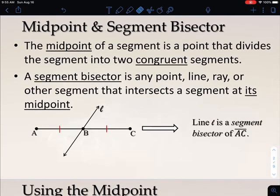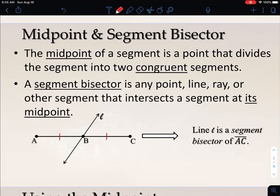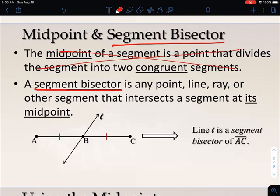Points are not the only thing that can cut segments in half. There's also this idea of what we call a segment bisector. A segment bisector is any point, line, ray, or other segment—really any geometric figure that cuts a segment in half. So it's going to intersect the segment at the midpoint. If we have a line that passes through that midpoint, that line is a segment bisector of line segment AC.